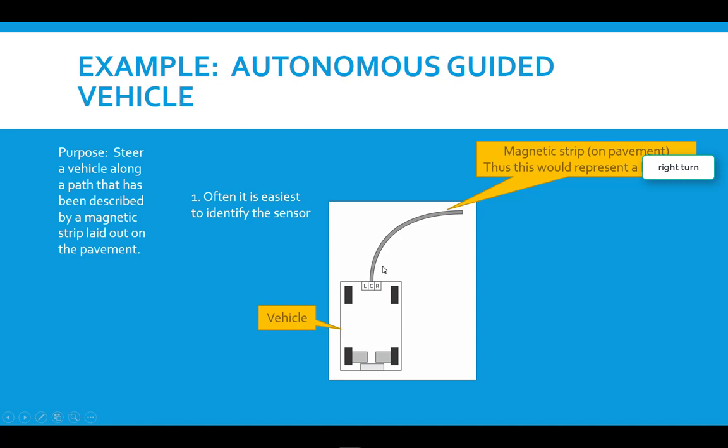Now, what we need to do is identify the sensors here, the various sensors. They're the easiest to identify often. Actually, in this case, we have three sensors—an array of sensors. We have some magnetic detectors, as we'll see. We call one the left detector, one the center detector, and one the right detector. So as shown here, the center detector is right over the magnetic strip, and that's basically where you want it to be.